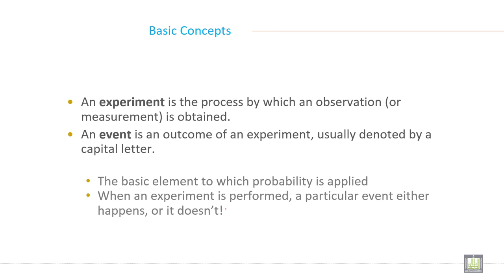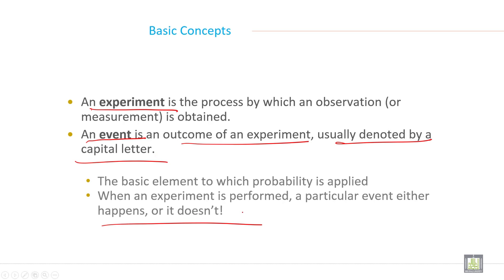Now some basic concepts. First, experiment — it is terminology used in probability. An experiment is the process by which an observation or measurement is obtained. Second, event — an event is an outcome of an experiment, usually denoted by a capital letter. It is the basic element to which probability is applied. When an experiment is performed, a particular event either happens or it does not.